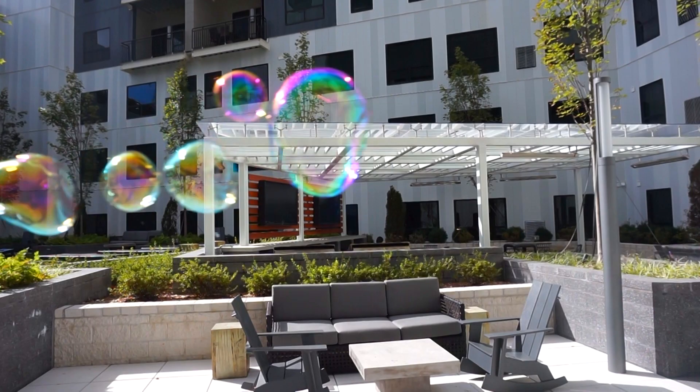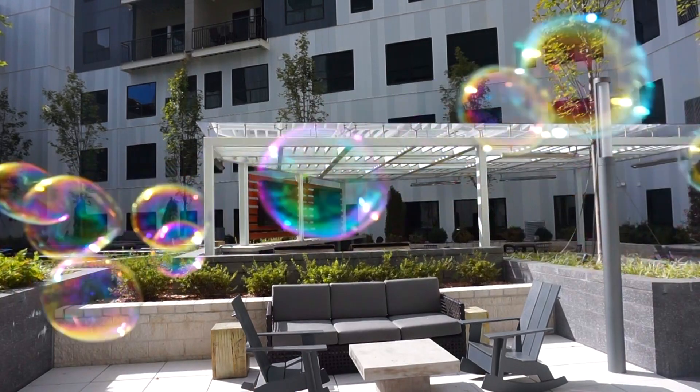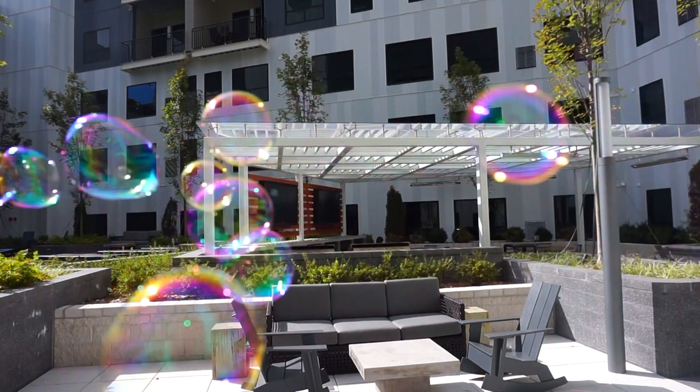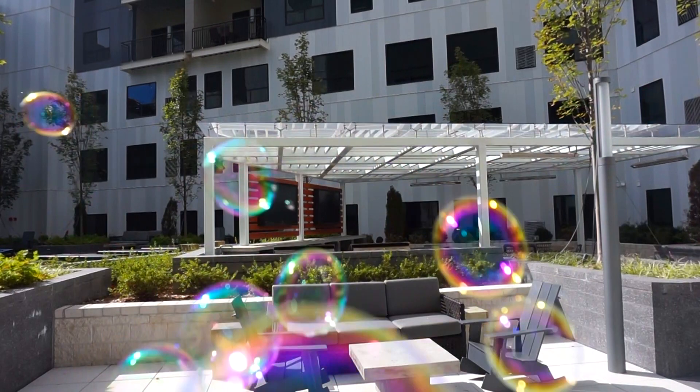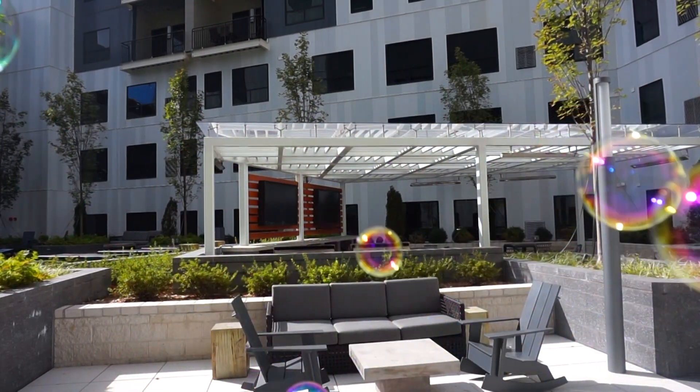This thickness varies all over the soap bubble, so different wavelengths of light are being cancelled out and amplified at different parts of the bubble. And that's why we see different colors in different areas.